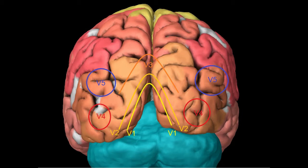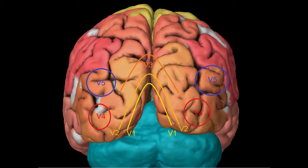From V1, we see V2, where cells are tuned to simple properties like orientation, spatial frequency, and color. Then V3, important for motion detection. V4 is often found to be important for color representation. And V5, sometimes called the middle temporal visual area, important for motion detection. These areas are all organized by general function, though there are also anatomical names associated with the various bumps and curves that make them up.